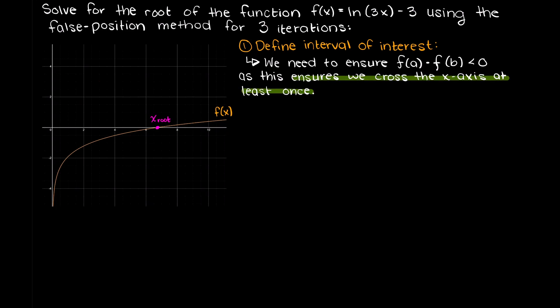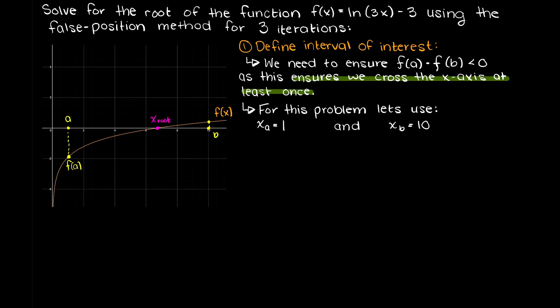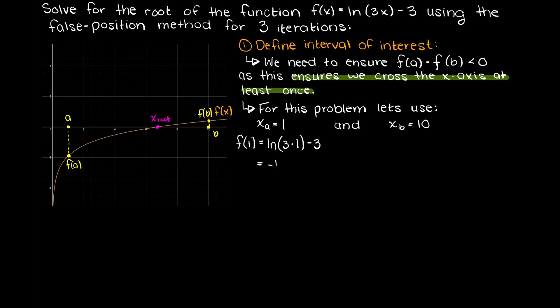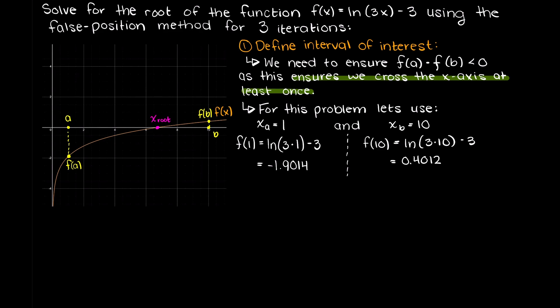So, for this problem, I will select the boundaries of 1 and 10, and as you can see, there is only one root within these two boundaries. Let's call our lower root of 1, a, and our upper root, b.